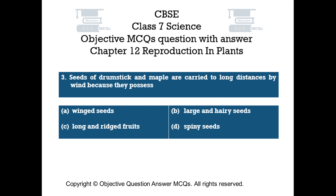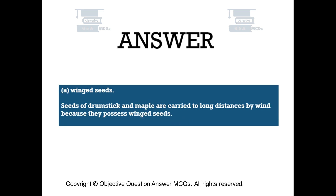The right answer is Option A — Winged seeds. Seeds of drumstick and maple are carried to long distances by wind because they possess winged seeds.